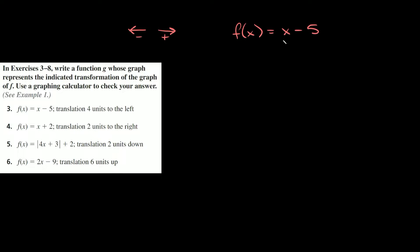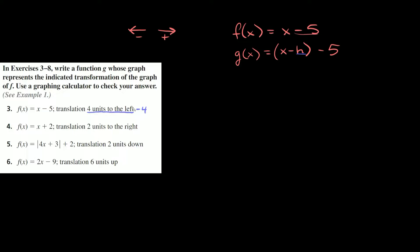This is a two-step process. The first thing you want to do is, in order to move it side to side, wherever you have an x you're going to replace it. So we write g of x and wherever we have an x we replace it with x minus h in parentheses, and we still have this minus five on the outside. The second step is figuring out what number to plug in for h from the translation. Here it says translate it four units to the left, so four units to the left would be negative four — that's the number we plug in for h.